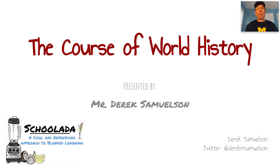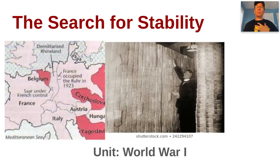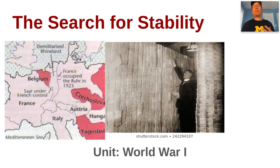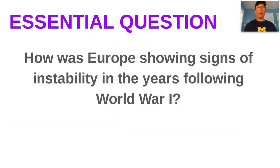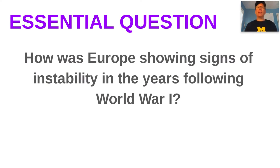Hello, and welcome to the course of World History. I am your host, Mr. Samuelson, and today we are looking at the search for stability in the years following World War I. Our essential question: how was Europe showing signs of instability in the years following World War I?